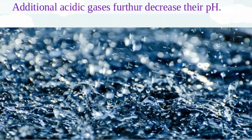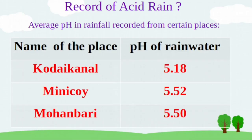A unit decrease of pH value causes a 10 times increase in acidity. In India, acid rain can be recorded from certain places like Kodaikanal, Minikoy and Mohanbari, with pH values of 5.18, 5.52 and 5.50 respectively.